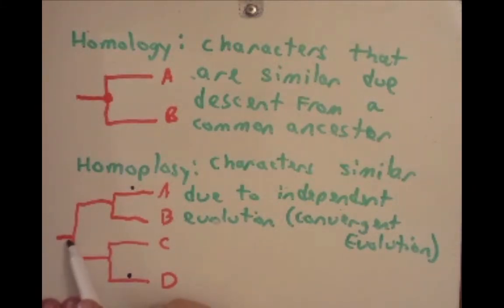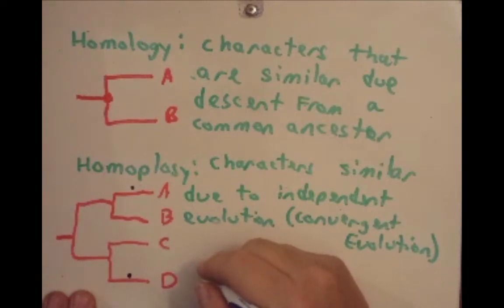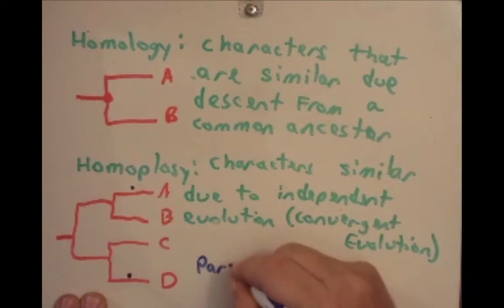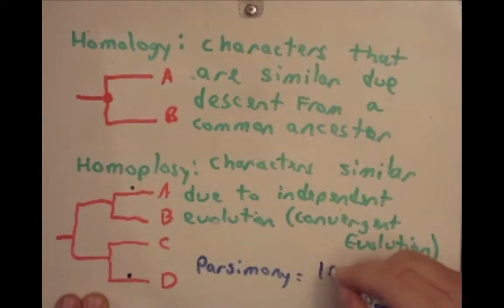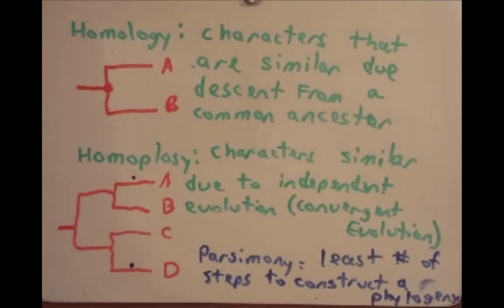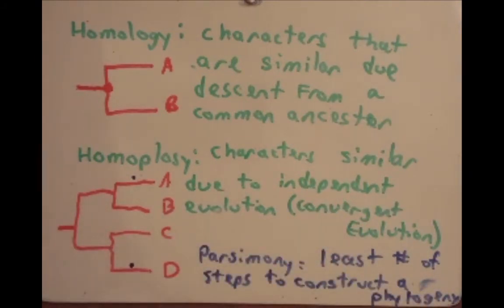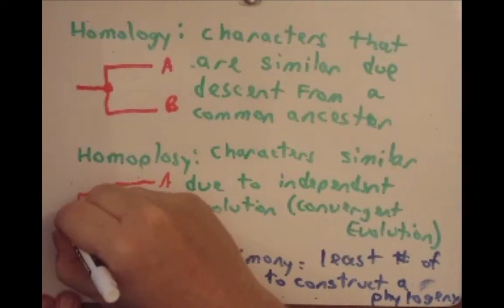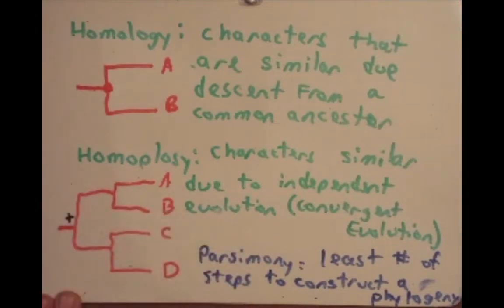You might think: why couldn't the trait have appeared in the common ancestor and then just disappeared along the way? That is a possibility, but I want to introduce the term parsimony — the least number of steps needed to construct a phylogeny. We say this is due to homoplasy because it only took two independent evolutionary events to get this trait in both A and D. If the structures were homologous due to a common ancestor, the trait would have had to appear at the common ancestor and then be lost in two lineages — that's three independent events.